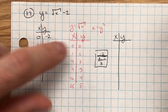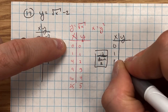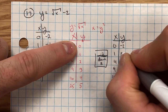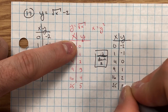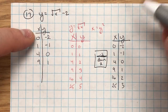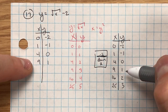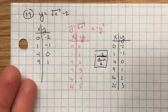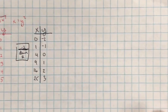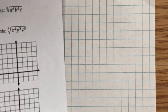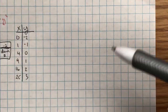So my transformed table has x-values 0, 1, 4, 9, 16, 25 and corresponding y-values -2, -1, 0, 1, 2, 3. Whether I plug in values arithmetically or use parent function transformation, I end up in the same spot. Let's go ahead and graph this.